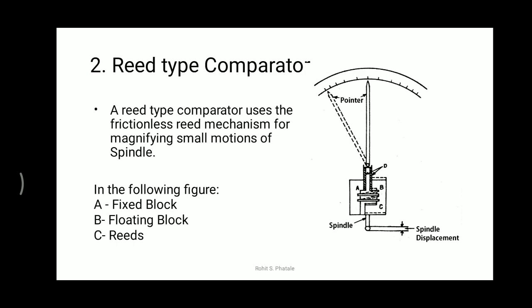The spindle is here. The function of the spindle is to give input to the instrument, or which gives input to this comparator. Over here you can see the spindle displacement is shown. As the spindle displaces up and down, the displacement is fed to the reeds. Those reeds are connected to or in contact with the floating block B, so as the spindle moves up and down the displacement is traced by the spindle and given to the reeds.